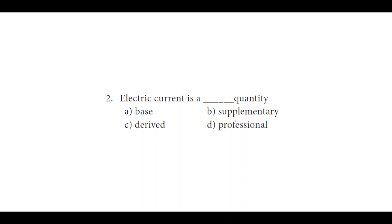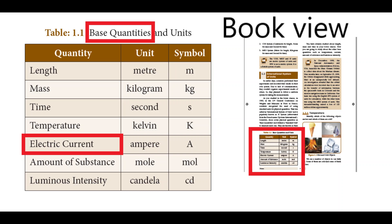We can move to the next question. Electric current is a ___ quantity. We have four options: A: base, B: supplementary, C: derived, and D: professional. Out of these four, we study only two in the lessons — A: base and C: derived. These two quantities are mentioned in the lesson pages, so we have to select the correct best answer.